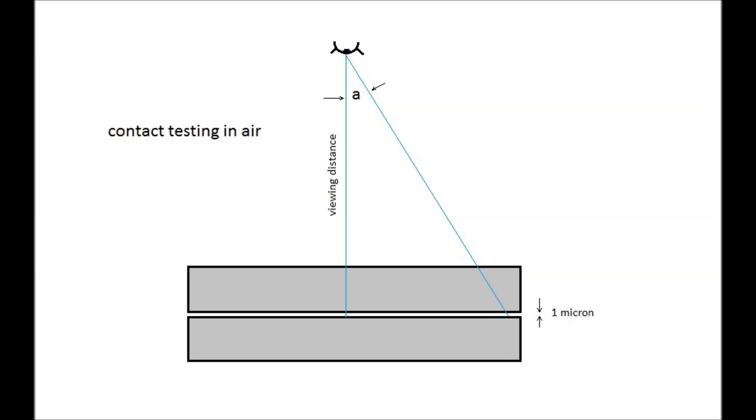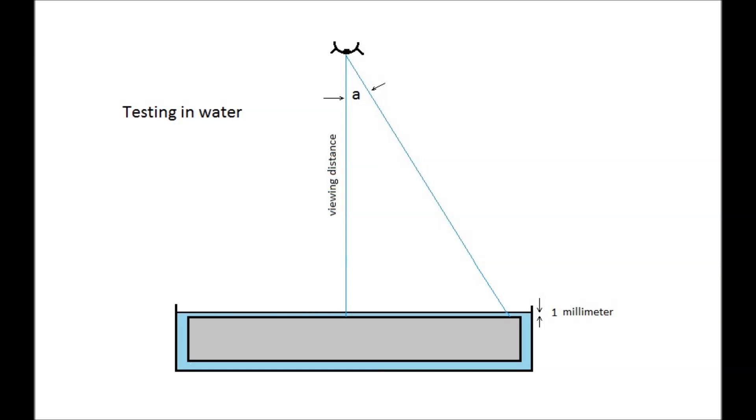When testing flats without a collimating lens, the light rays travel a longer distance at the edge of the part than they do in the middle, causing a cosine error. Two flats in air contact have perhaps one micron gap or so, so at a reasonable viewing distance this cosine error can be insignificant. However, in water with a one millimeter water thickness, the path length is perhaps a thousand times more, plus the wavelength in water is 33 percent shorter, so the viewing angle must be extremely small. This will cause a perfectly flat optic to show concave rings of power, which is why you need a collimating lens when testing on water.